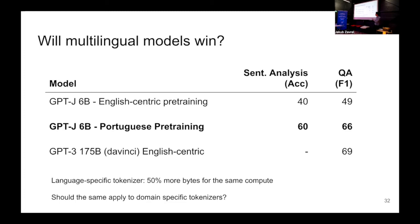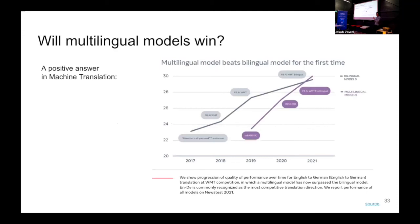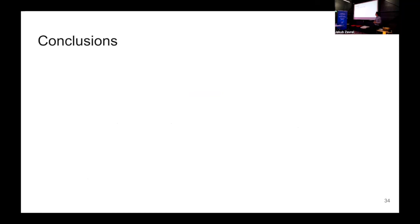One trade-off is the cost of pre-training these models. A benefit is that we're using a language-specific tokenizer, so we can feed 50% more words as input for the same amount of compute. The same should apply to domain-specific data — scientific, medical, or otherwise. However, there's a counter-argument: Facebook Meta won last year's WMT competition for the first time using a multilingual model instead of a bilingual one. It seems that as soon as you reach a certain number of parameters, a multilingual model can beat a monolingual or bilingual one.